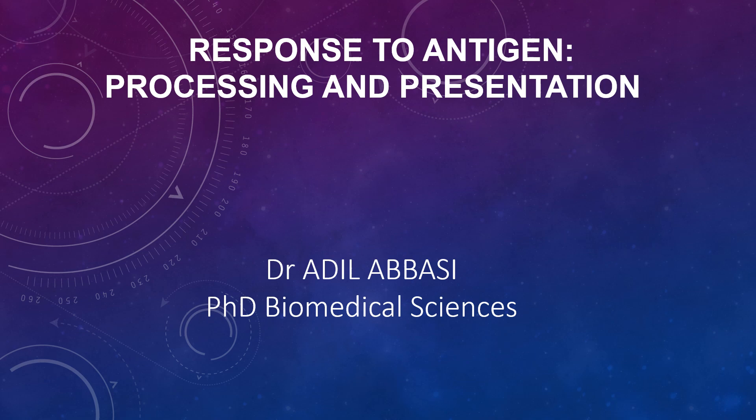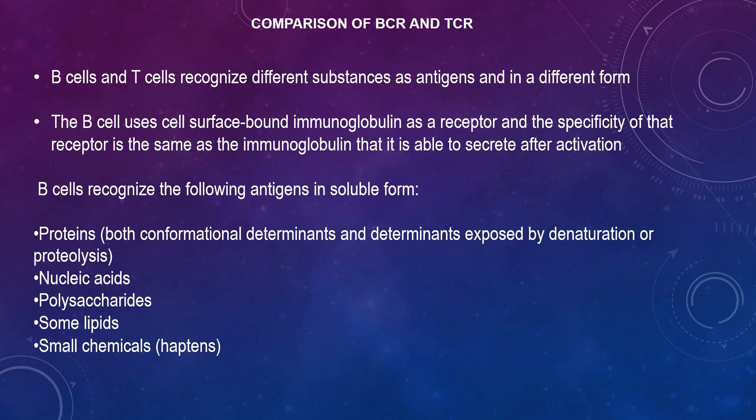Comparing BCR and TCR: B cells and T cells recognise different substances as antigens in different forms. The B cell uses surface-bound immunoglobulins as a receptor, and the specificity of that receptor is the same as the immunoglobulin that is secreted after activation.